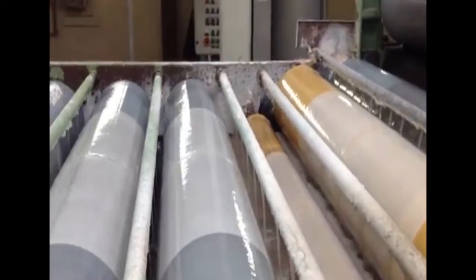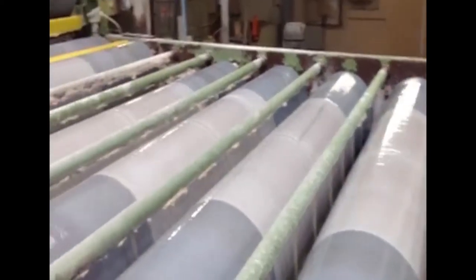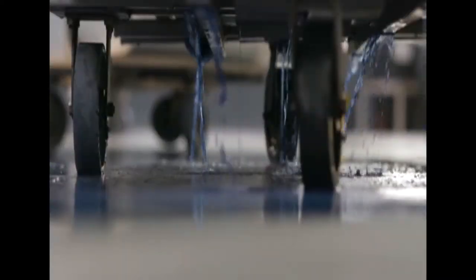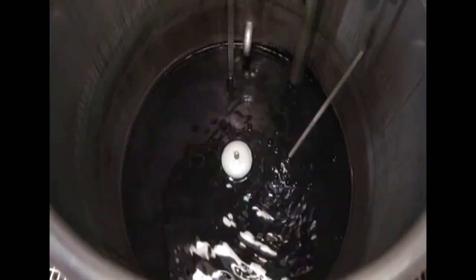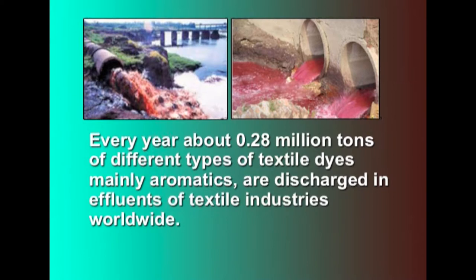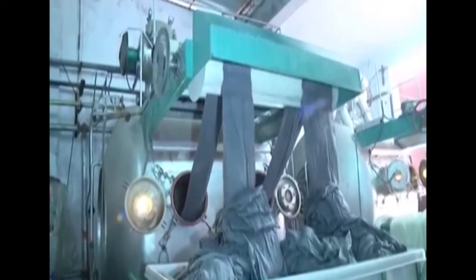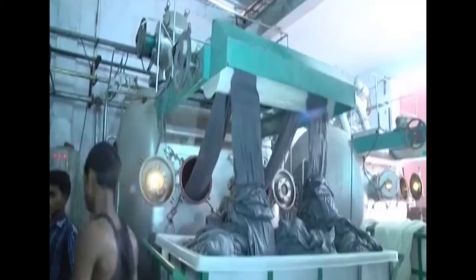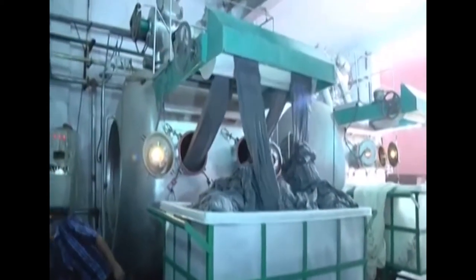Textiles are the fifth largest contributor of carbon dioxide emissions. It is estimated that during dyeing, about 15 to 20 percent of the dyes are not utilized and become part of effluents. Every year, about 0.28 million tons of different types of textile dyes, mainly aromatics, are discharged in effluents of textile industries worldwide. Huge amounts of effluent dyes tend to degrade into simpler molecules, finally releasing substantial amounts of carbon dioxide into the environment.